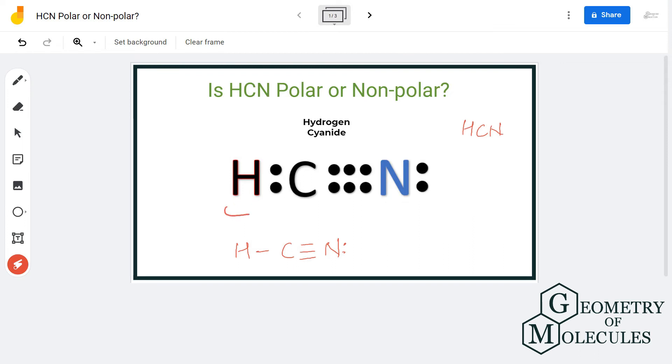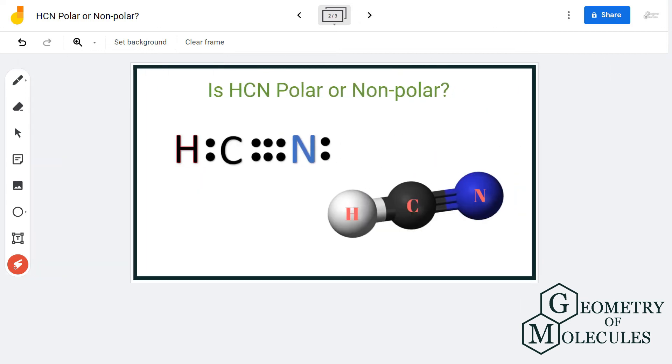This means there will be a dipole moment from hydrogen atom towards nitrogen atom. That means that nitrogen will try to pull the electrons towards itself. So as there is a dipole moment in this molecule, HCN is a polar molecule.